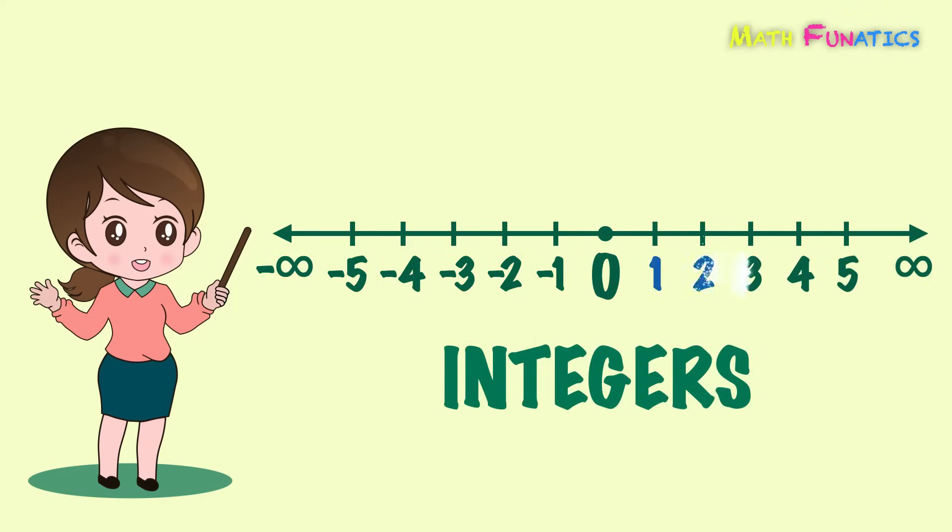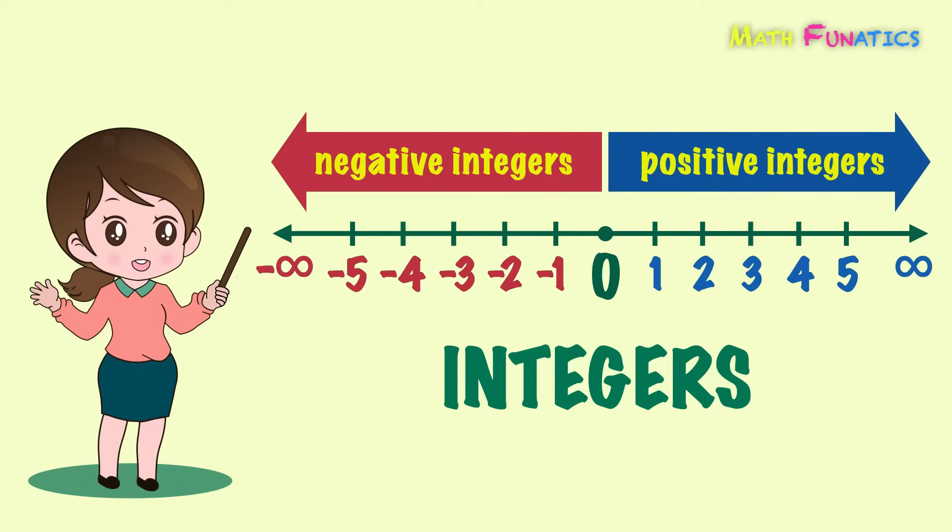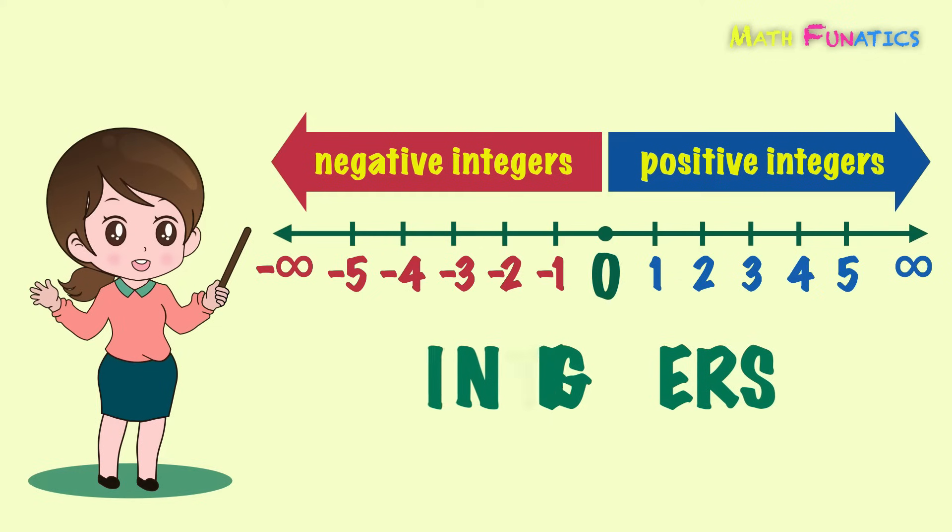Integers that are greater than 0 are called positive integers. They can be written with or without a positive sign. Integers that are less than 0 are called negative integers. They must be written with a negative sign. On the other hand, 0 is neither positive nor negative, meaning 0 has no sign at all. Furthermore, the set of positive and negative integers may also be called signed numbers.